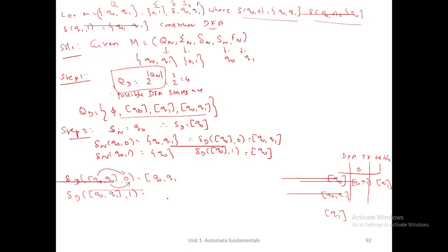I am not calculating these 2 states previously, so I should write those states separately. The first state is [q0,q1] and the second state is [q1]. Now you calculate those values. I should calculate delta_D of [q0,q1] with each input symbol — 0 and 1. Check the answer from the given NFA: q0,0 is {q0,q1} and q1,0 is phi. So the only answer is {q0,q1}. For input 1: q0,1 is q0 and q1,1 is {q0,q1}. Since q0 is already available, the answer combined is {q0,q1}. So for [q0,q1], the same state is maintained for both input symbols 0 and 1. This is not a new state — it is already available in the predicted DFA states.